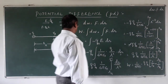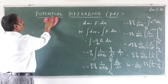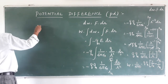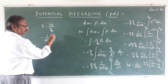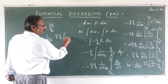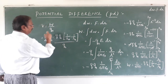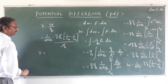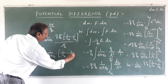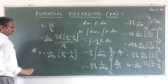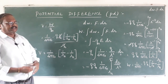So the work done in moving the charge is equal to 1 upon 4 pi epsilon naught into q·q₀ of 1 upon rA minus 1 upon rB. The potential difference between two points is work done divided by the test charge q₀, giving: 1 upon 4 pi epsilon naught into 1 upon rA minus 1 upon rB. This is the formula for potential difference between two points, which is a very important concept we will use further in current electricity as well.